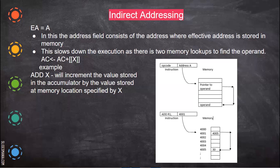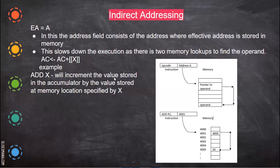So there are two memory location accesses — this is called indirect addressing. The address field will consist of the address where the effective address is stored in memory. This slows down the execution because there are two memory lookups to find the operand. So this actually slows down the process. The representation is: accumulator equals accumulator plus the content of the content of memory location. So add X will increment the value stored in the accumulator by the value stored at the memory location specified by X.